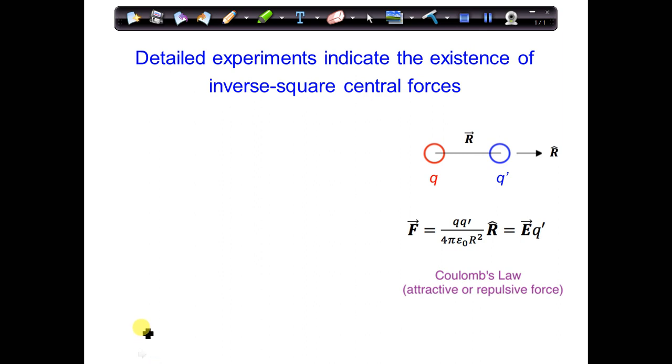In a case where both charges are positive, the electric field springs outward from Q in all directions. So let's say this is a positive Q. Both of them are positive.